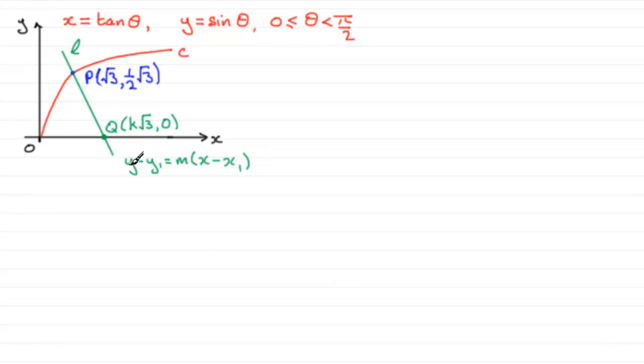And at Q, we know that the y-coordinate is 0, and I'll then be able to work out what x is. And I can compare it to the x-coordinate here, k root 3, and I should be able to find out what k is. So that's briefly how I'm going to go about this question. You might at this stage want to pause the video and have a go yourself.